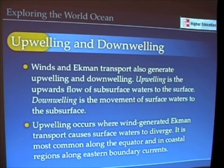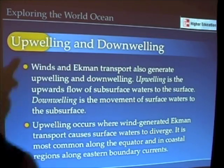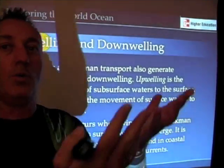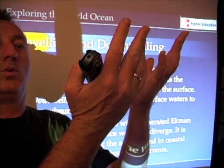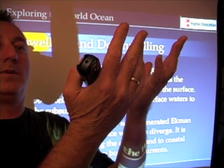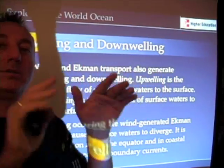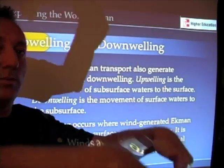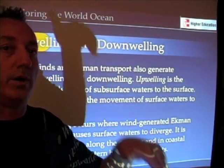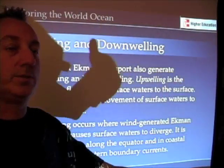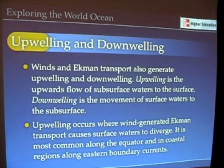Ekman Transport also generates this phenomenon known as upwelling. Upwelling is defined as the upward flow of deeper water towards the surface. It has a counterpart called downwelling, which is the downward flow of water from the surface towards the depths.